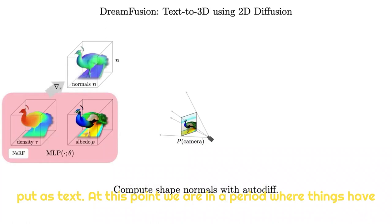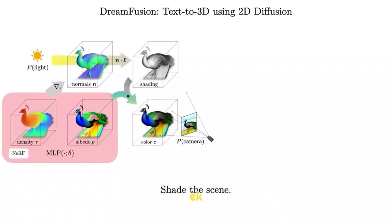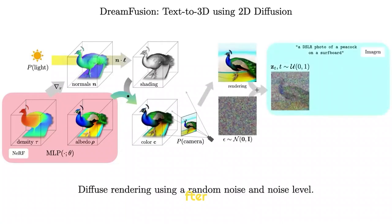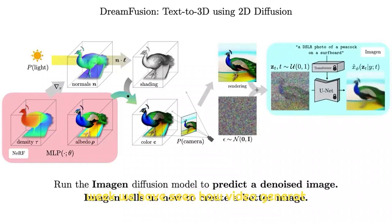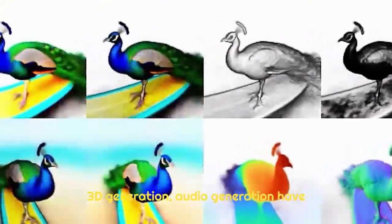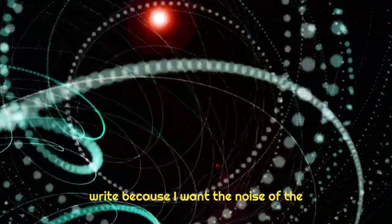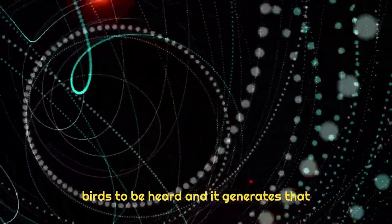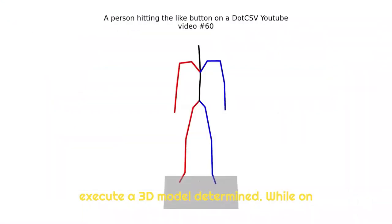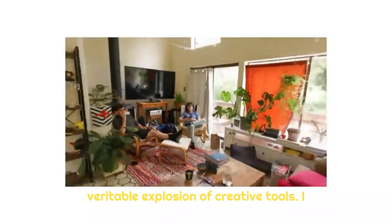They have managed to enable AI to master 3D generation by training it with two-dimensional image-generating systems, combining these systems with NeRF technology — a strategy in which the AI gradually models a three-dimensional object with appropriate textures to generate an image from a given perspective, which combined with vision models produces an image resembling the text input. We are in a period where things have been accelerating and where week after week we have seen video generation, 3D generation, and audio generation resolved. There are audio-from-text projects where you write that you want to hear birds, and it generates that sound. Text-to-animation models also appear where you can write how you want an animation to execute on a given 3D model, while NeRF also continues to advance — a veritable explosion of creative tools.